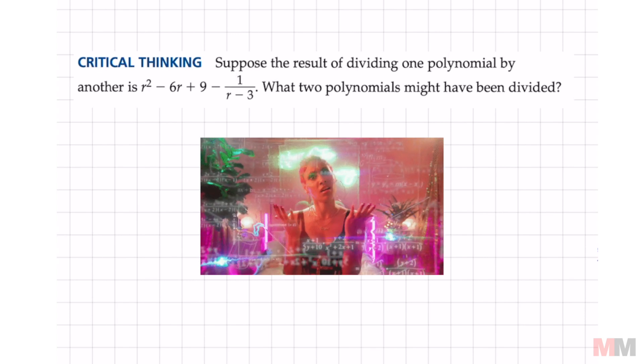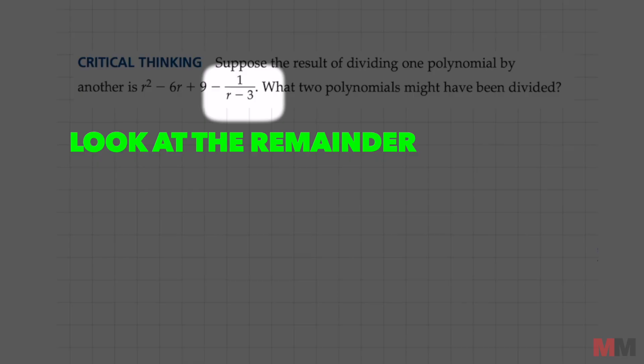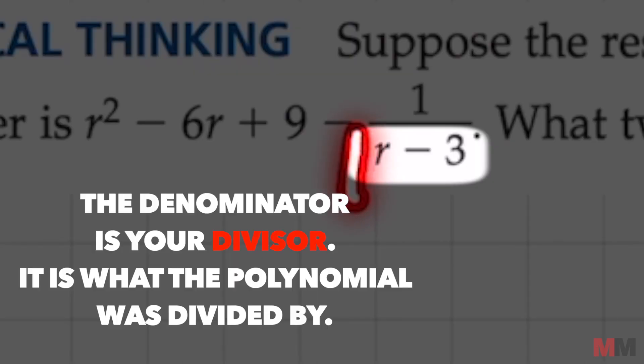So we're gonna reverse engineer this, and the first place you want to look at is this remainder right here. This is actually the remainder of the quotient. The denominator of that is going to represent your divisor.